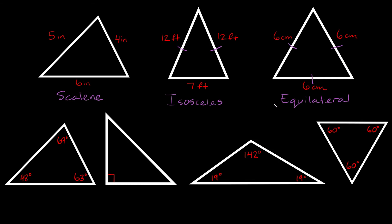That's how you can identify triangles by their sides, but we can also identify them using angles. So with this first one, we have three angles: 69 degrees, 48 degrees, and 63 degrees. Something you might notice is that all these angles are less than 90 degrees. An angle that is less than 90 degrees is called an acute angle. So if you have a triangle where all the angles are less than 90 degrees, that's called an acute triangle.